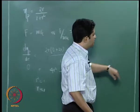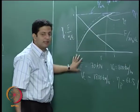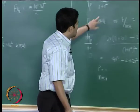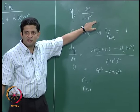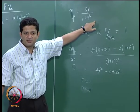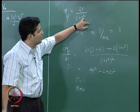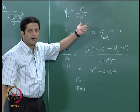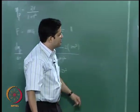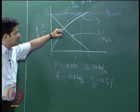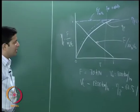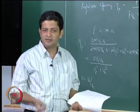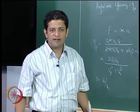Propulsive efficiencies for rockets are typically slightly higher than those of air breathing engines. This is because the denominator is (1 + R²) for rockets versus (1 + R) for air breathing engines; since R is less than 1, (1 + R²) is smaller than (1 + R), making the rocket η_P larger. So the question becomes: if propulsive efficiency is higher for rockets, why should we not use rockets for everything?